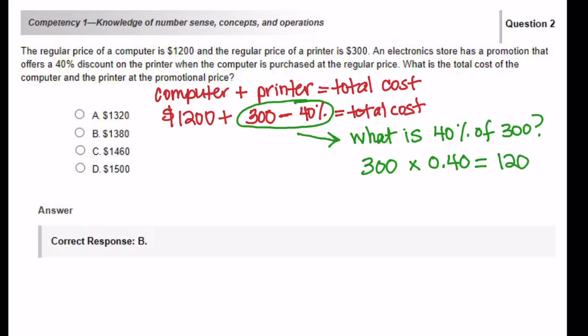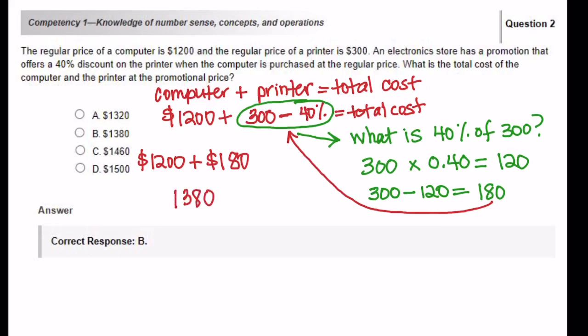Once you do that, you can calculate the two quantities and you get 120. Or in this case, it's going to be $120 taken away from $300 to get you $180 for the price of the printer. Let's take that $180 and place it back into our main equation. $1,200 plus $180 is going to get us $1,380 for the total cost of the computer and the printer at the promotional price.